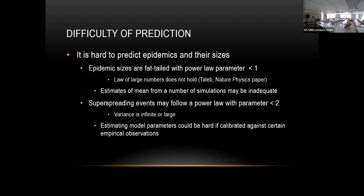We looked at superspreading events at given locations. We are modeling how infection spreads in a crowded location. If you look at infection outbreaks in crowded locations, you could argue that it follows a power law with a parameter less than one — meaning the mean exists but the variance is infinite or very large.